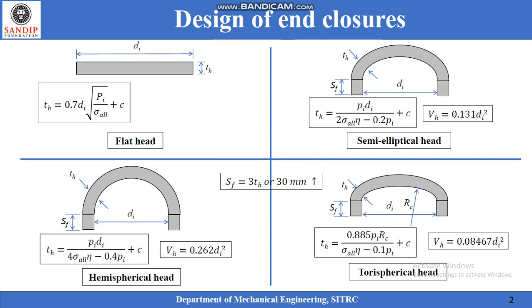Out of formed heads we will be discussing three types of heads: hemispherical head, semi-elliptical head, and torispherical head. The formula for thickness of these heads is presented in this slide, along with the formula of volume contained inside this head, which is a function of internal diameter di.